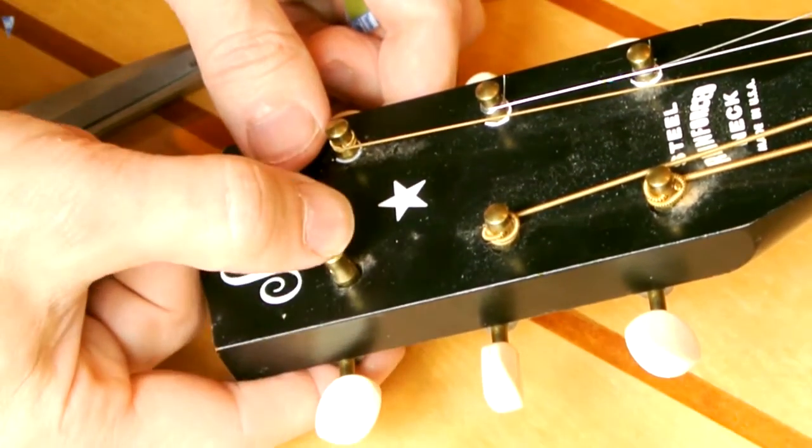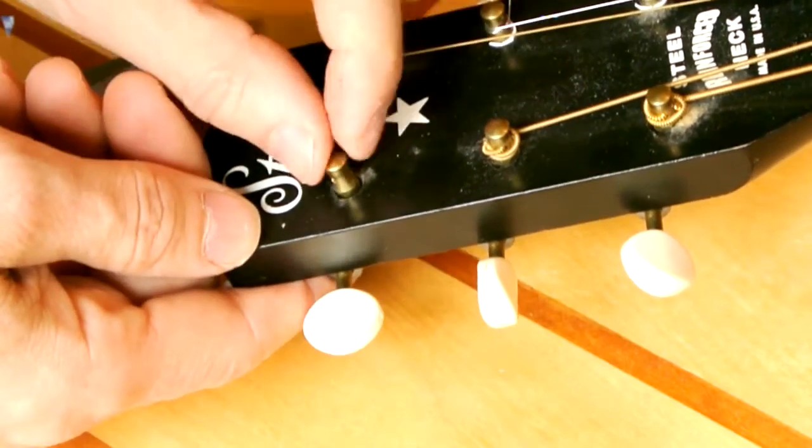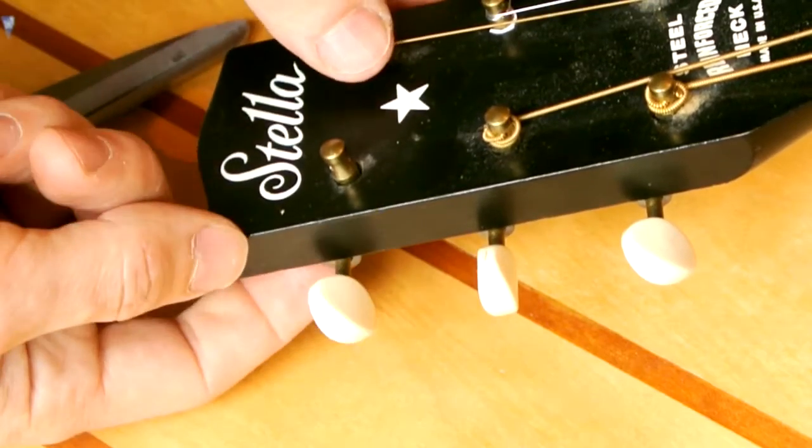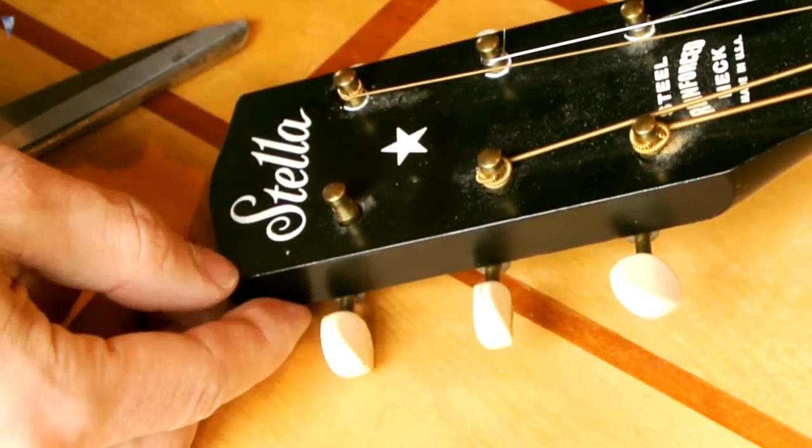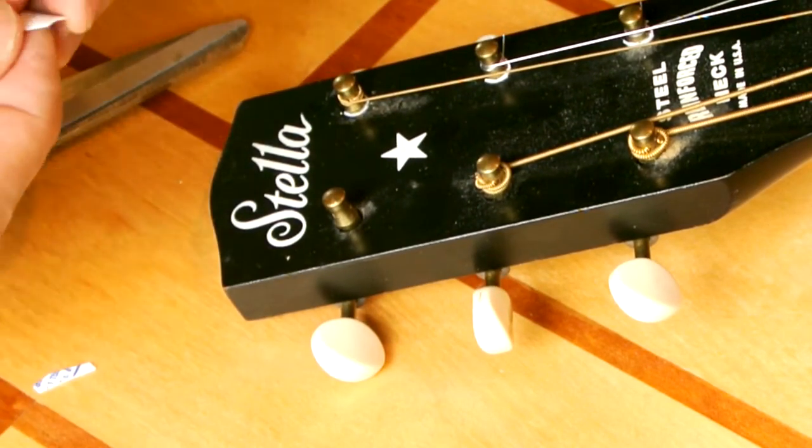With the string removed, you can see this post has quite a bit of play. Depending on how it rests against the worm gear in the back, that can cause it to wiggle and makes for very inconsistent tuning.